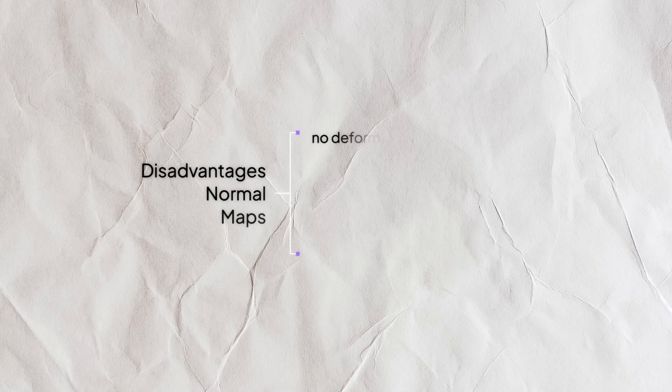Disadvantages of normal maps: no real deformation — only light and shadows are affected. And often there are issues with baking. I sometimes have these issues too, but with normal maps there are often more problems when baking, not just in Blender — it also depends on unwrapping and so on. At that point I always recommend Marmoset Toolbag for baking normals — I think it's better than Substance or Blender.